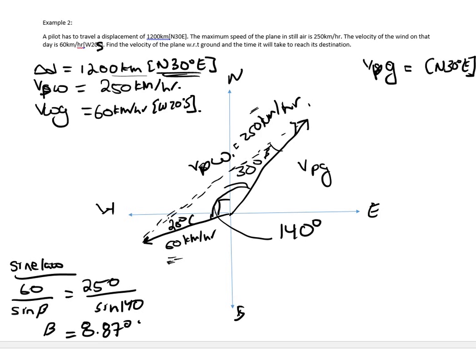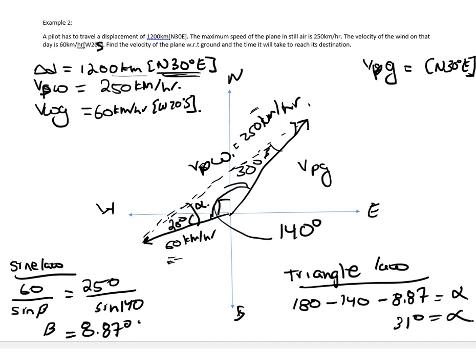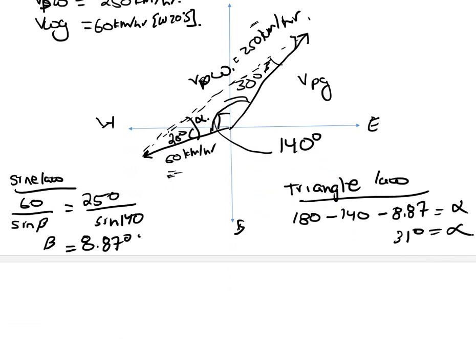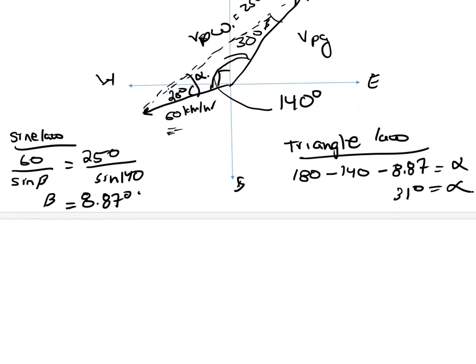And if you use the triangle law, you can solve for alpha here. This angle. And that just means that 180 degrees minus 140 degrees minus beta, which is 8.87, equals alpha. And alpha is 31 degrees. So now we have all the angles. Two sides. The length of two sides. We just need to... And we can use the cosine law. Or you can use the sine law again. But cosine law is... I'm gonna use the cosine law to solve for the velocity.